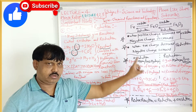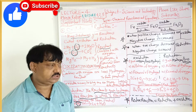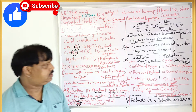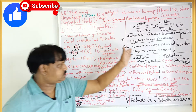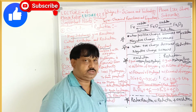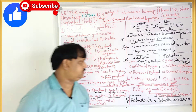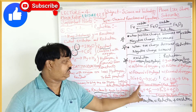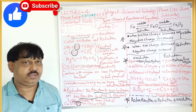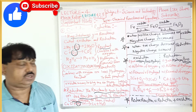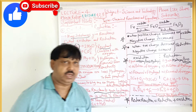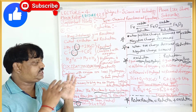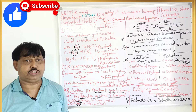Toh aap yaad rakhenge: gain of oxygen — oxidation; gain of hydrogen — reduction; loss of hydrogen — oxidation; loss of oxygen — reduction. For example, where there is gain of oxygen, that is oxidation, and where there is gain of hydrogen, that is reduction. Yeh hai pehchaanne ka tarika.